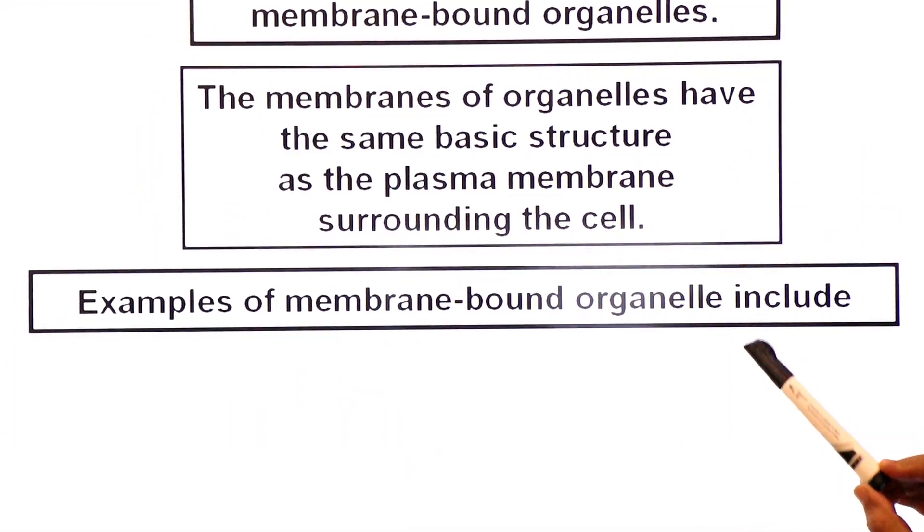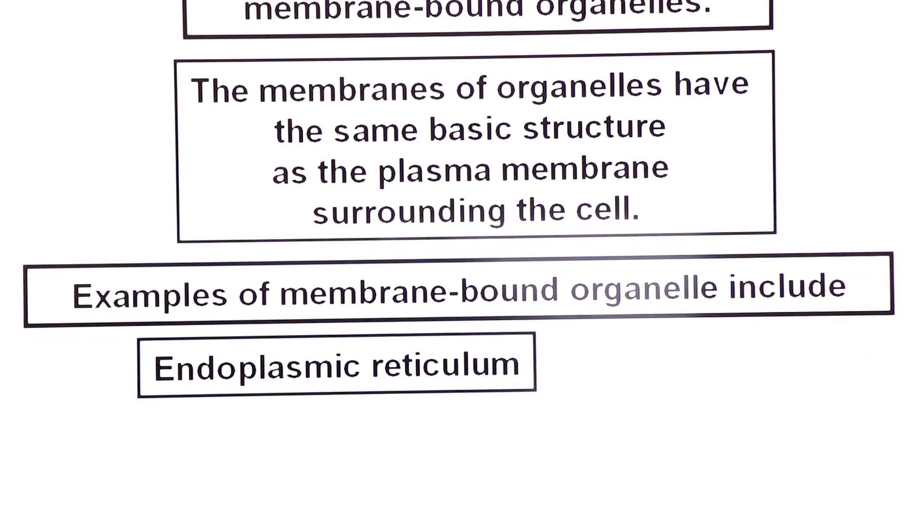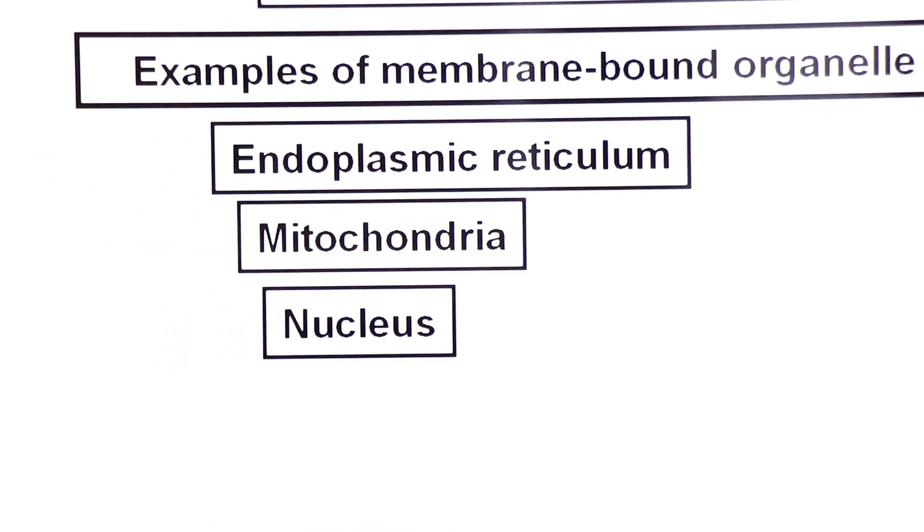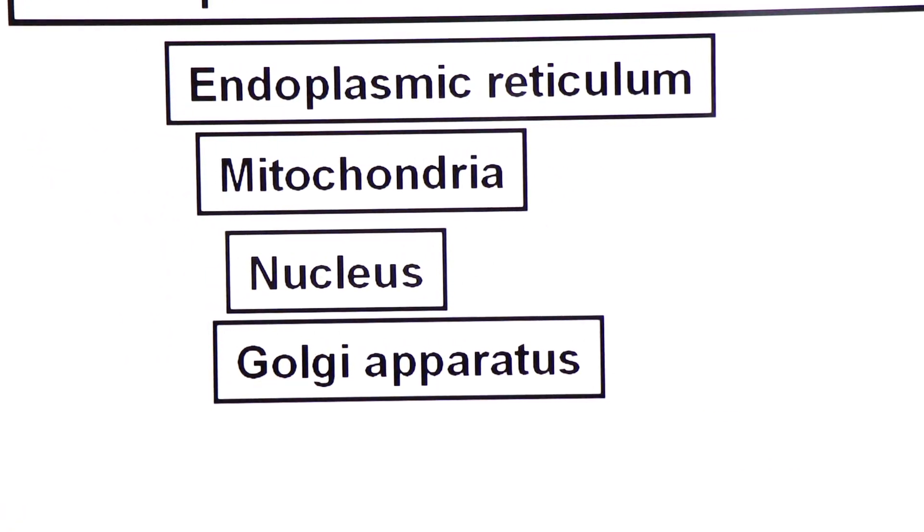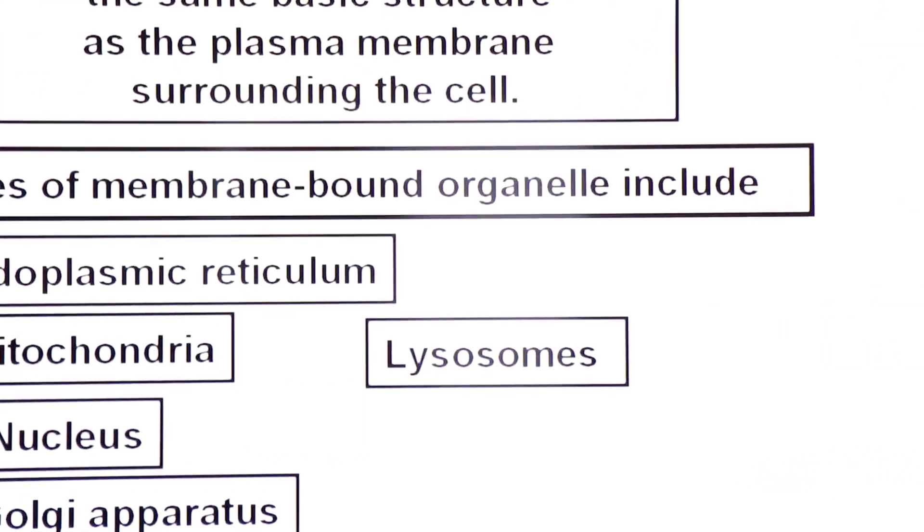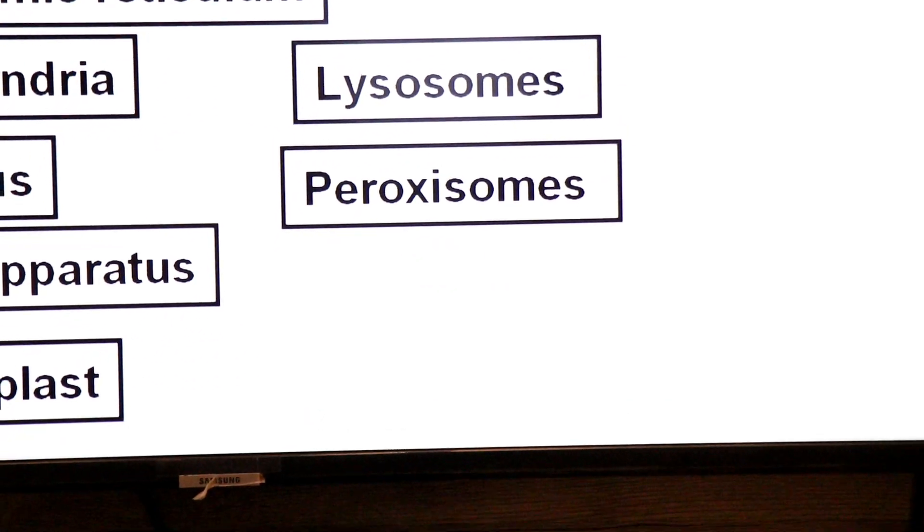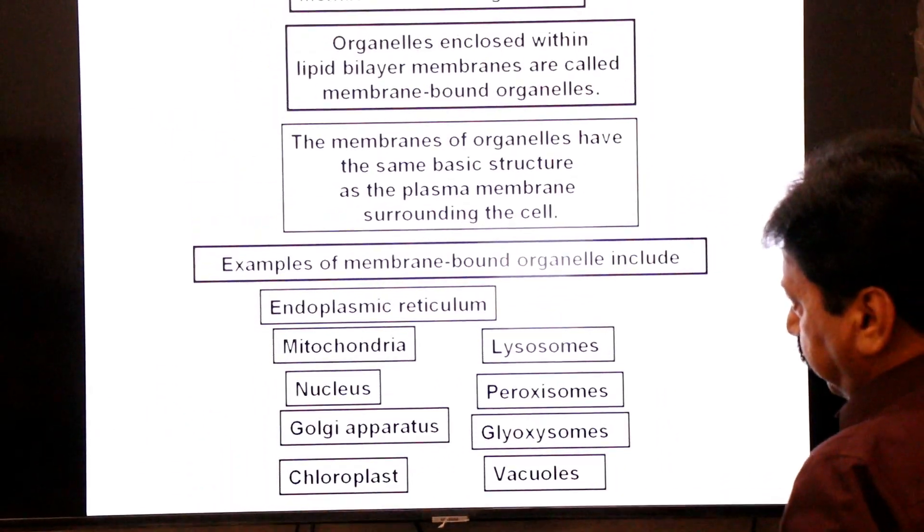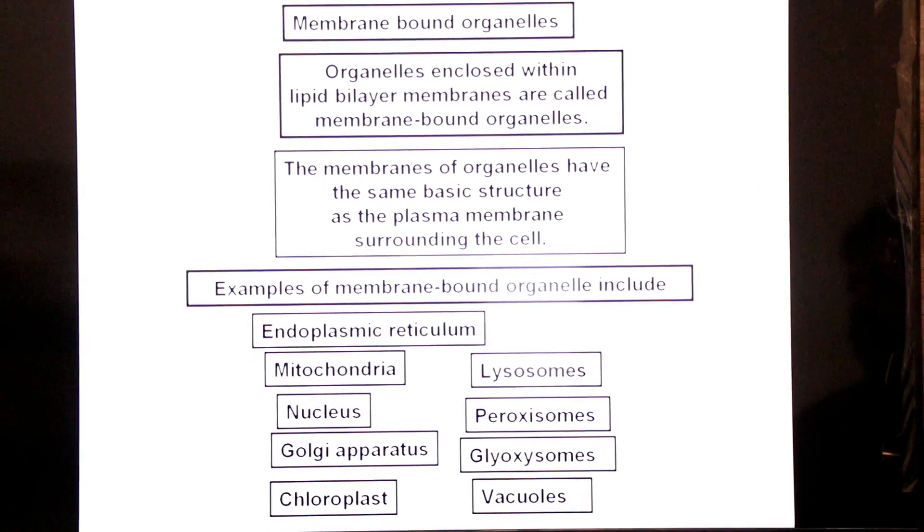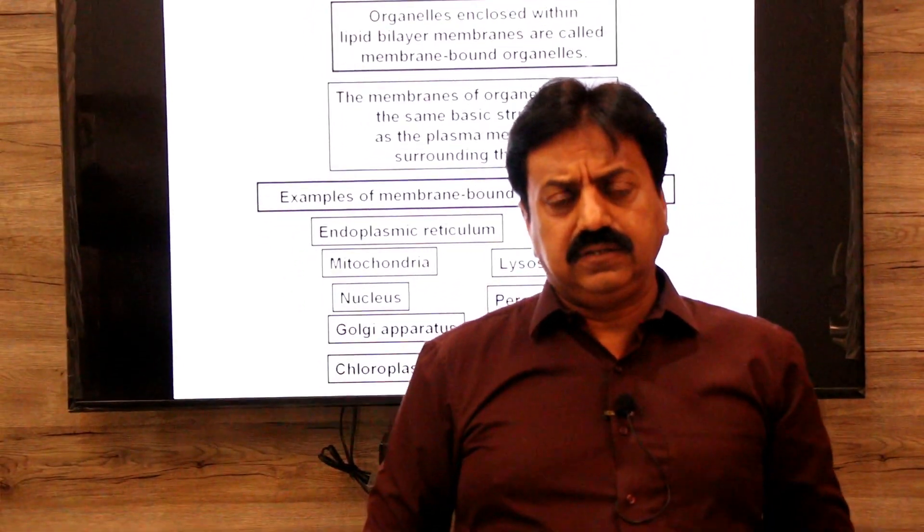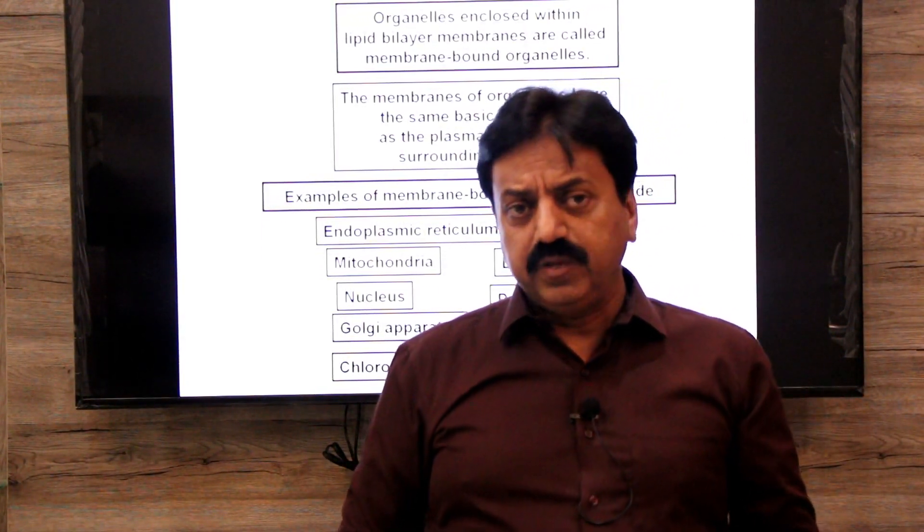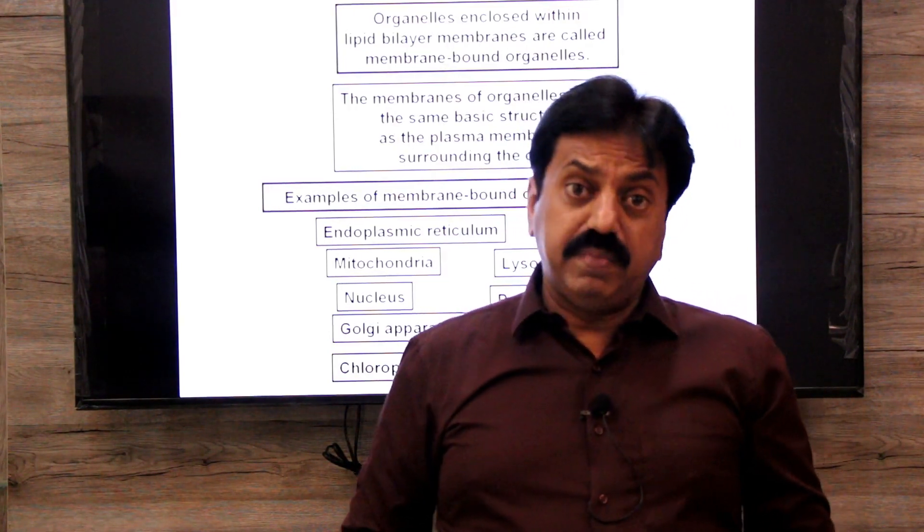Examples of membrane bounded organelles found in eukaryotic cell. First endoplasmic reticulum. Mitochondria also membrane bound organelles. Nucleus is also a membrane bound organelle. Golgi apparatus also called Golgi complex, a membrane bound organelle. Chloroplasts are the membrane bound organelles of plants and some protista. Lysosomes, digestive organelles, these are also membrane bound organelles. Peroxisomes, glyoxysomes and vacuoles, all are examples of membrane bound organelles of eukaryotic cell. Focus on the slide. Now let's understand one term: endomembrane system.